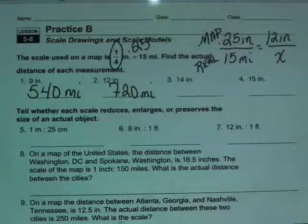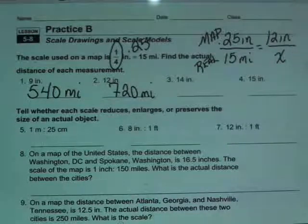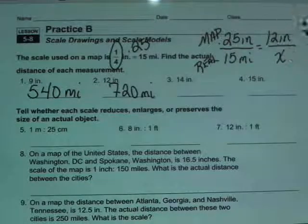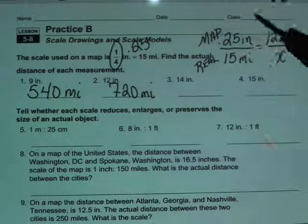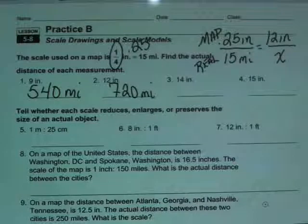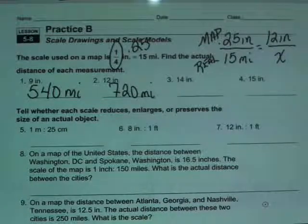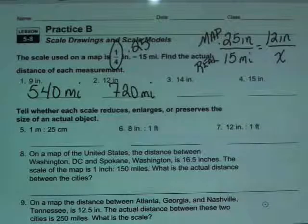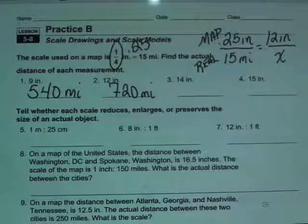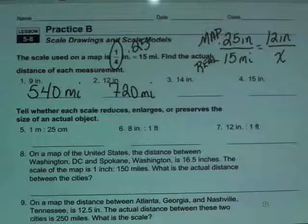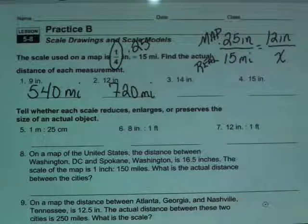In 3 and 4, you're going to continue on. I'm not going to do those with you, but again, you're only changing this second ratio. This first ratio will be exactly the same in 3 and 4. In 5, 6, and 7, we're supposed to tell whether each scale reduces, enlarges, or preserves the size of an actual object.